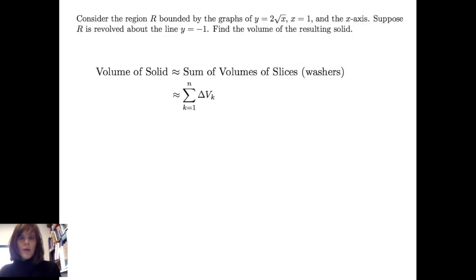To find the volume of the solid, we approximate this using the sum of the volumes of the washers. And so I'm going to sum delta v sub k, k going from 1 to n. So I'm going to get pi times 4 times x sub k plus 4 times the square root of x sub k times delta x sub k, k going from 1 to n.